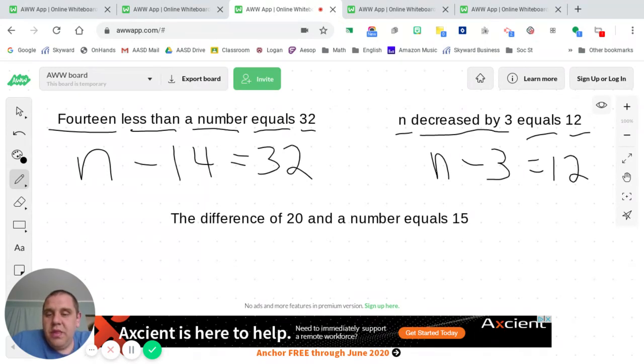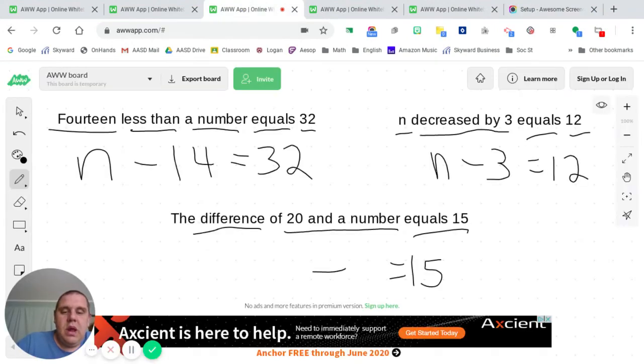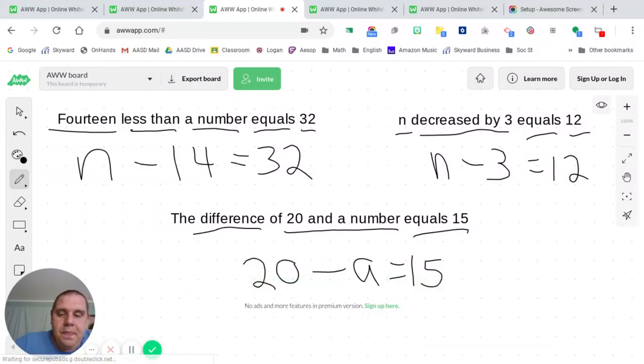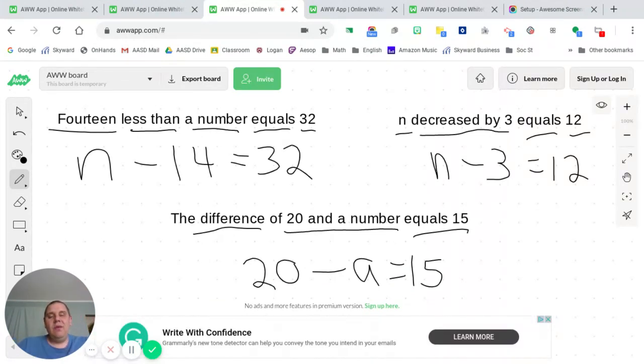Last example. The difference, difference is the answer to a subtraction problem, of 20 and a number equals 15. The difference, we know that means subtract, of 20 and a number equals 15. The equals 15 is an easy part to put in. We know that we're going to be subtracting. Now, are we going to write 20 minus N or N minus 20? In this scenario, it does not tell us what we are going to be doing. So we are going to be taking 20 minus the variable, 20 minus A. So 20 and a number, that doesn't really tell you what order to put it in. You just simply put it in the order in which they present it to you. So the difference of 20 and a number equals 15.